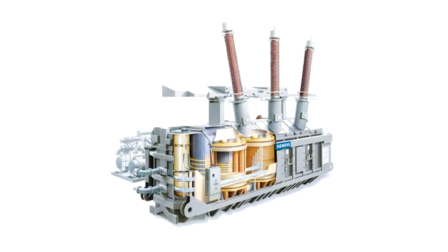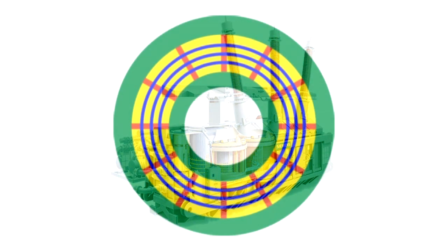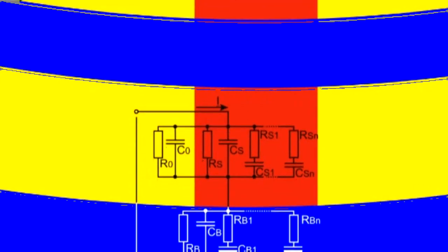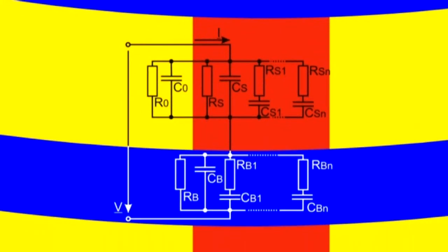Transformer insulation consists of oil, spacers and barriers. In the equivalent circuit, these elements are represented in black, red and blue respectively. The equivalent circuit for real insulation is rather complex.